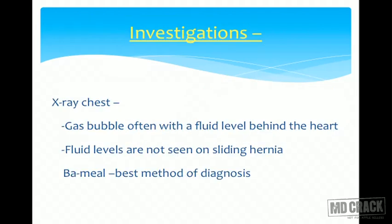For investigations, X-ray chest is the first radiological investigation. In paraesophageal or rolling hernia, it shows a gas bubble often filled with fluid in the posterior mediastinum. In sliding hernia, no fluid or gas bubble level is seen in the posterior mediastinum because no part of the stomach has herniated there. Barium meal is the best method of diagnosis, performed in the Trendelenburg position to reveal the exact herniation.